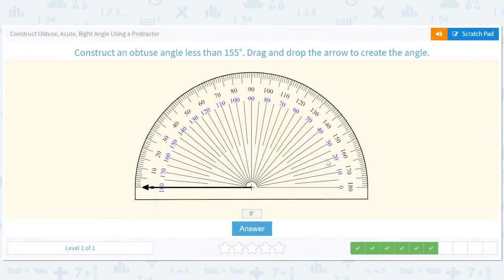Construct an obtuse angle less than 155. Same thing works - 120. It's obtuse, bigger than 90, but less than 155.